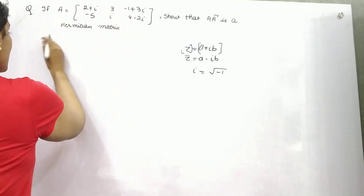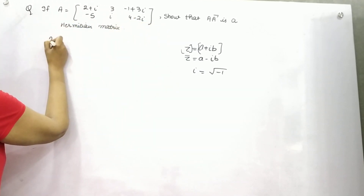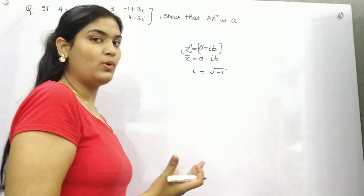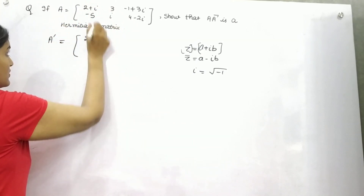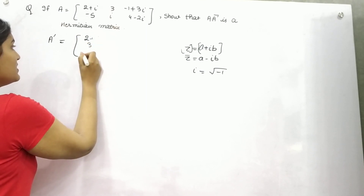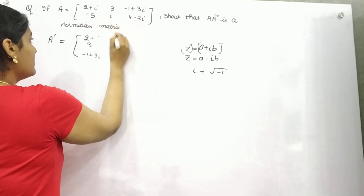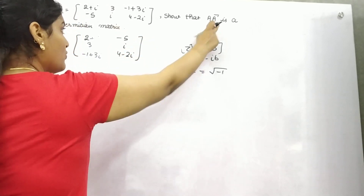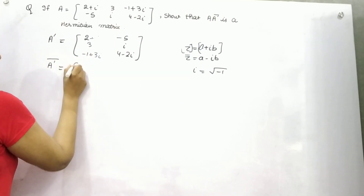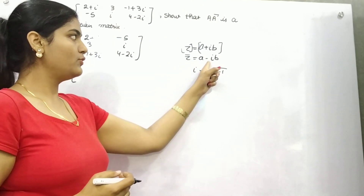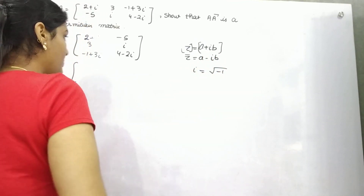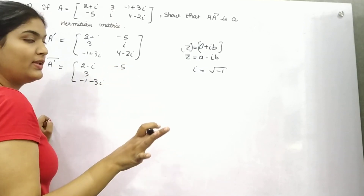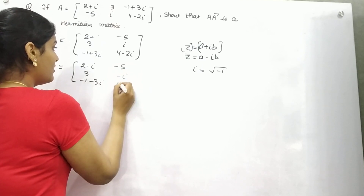Let's start this question. So you have matrix A, and first you have to find out A transpose. Transpose means rows need to be converted into columns, right? So row 1 gives: 2 plus iota, 3 minus 1 plus 3 iota — this is your column 1. And then minus 5 iota, 4 minus 2. Now you have to find out the conjugate as well. For conjugate, you have to change the sign of the imaginary part, so it will be 2 minus iota, minus 1 minus 3 iota. Real part will not change. Minus iota, 4 plus 2 iota.